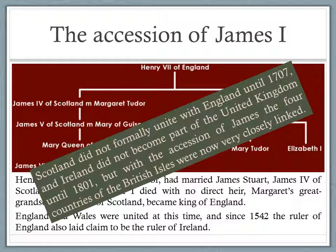We don't formally have a United Kingdom, but in practice we have four countries very closely joined together. They don't become the United Kingdom until Scotland formally joined together with England at the beginning of the 18th century. Ireland didn't join until the beginning of the 19th century. Ireland was never a comfortable partner, and even Scotland, as you know, had a vote fairly recently and many Scottish people wanted to leave the United Kingdom. So there's never been a very comfortable relationship, but these countries have had a very close history.